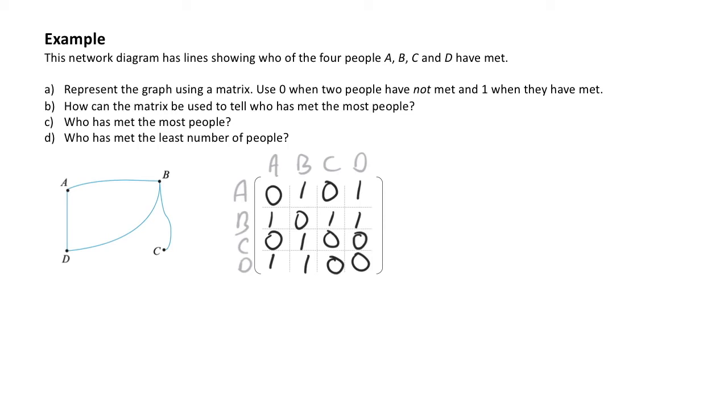Part B asks us how to use the matrix to be able to tell who has met the most people. To determine how many people each of them has met, we go ahead and add up the rows. Person A has met two people, Person B has met three people, Person C has met one person and person D has met two people.